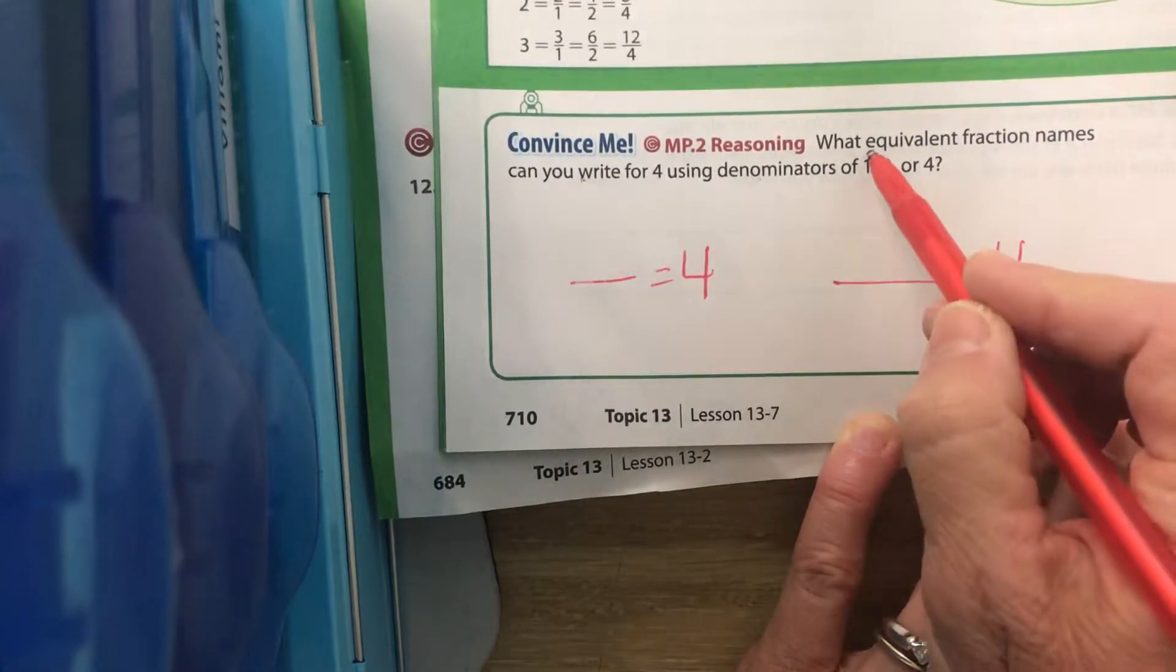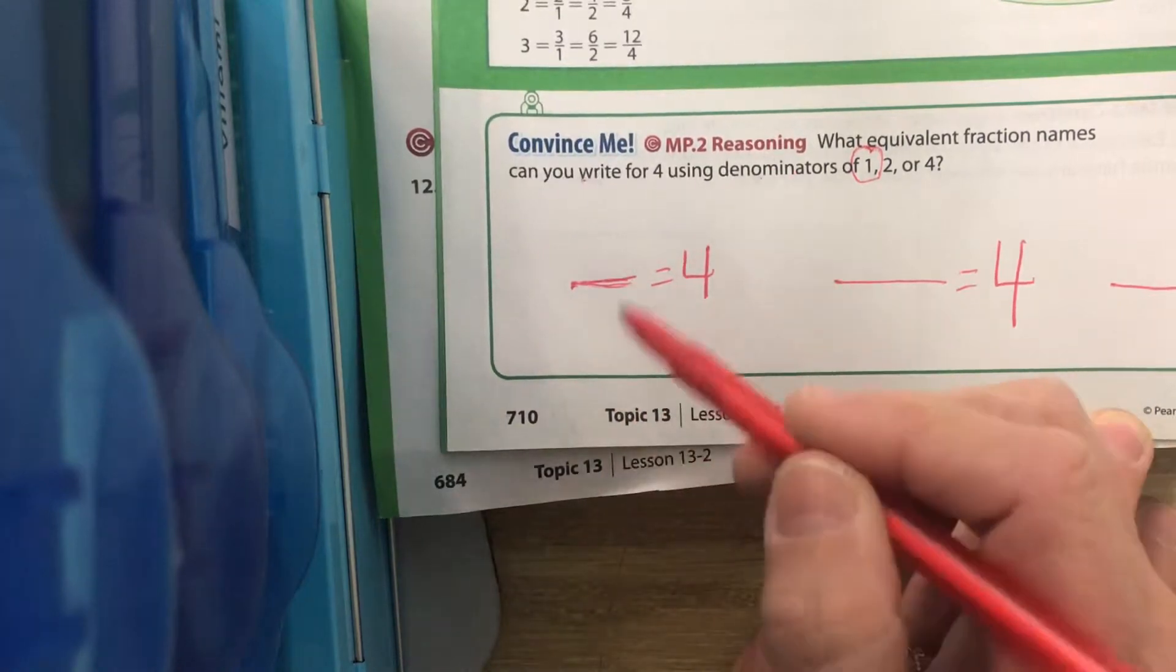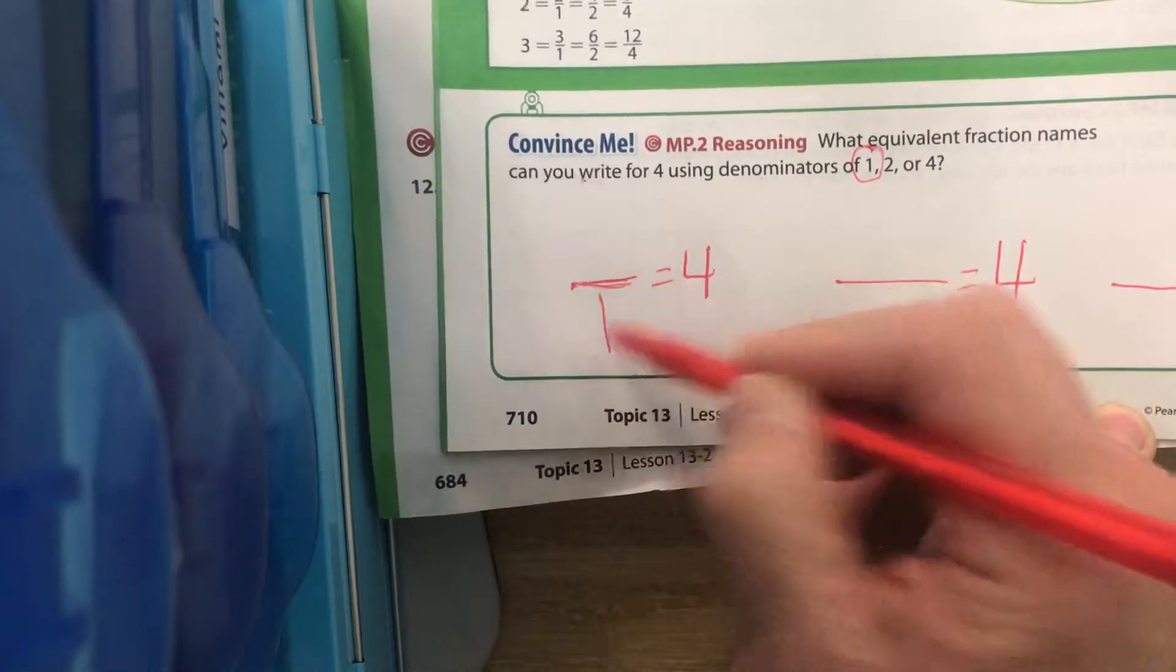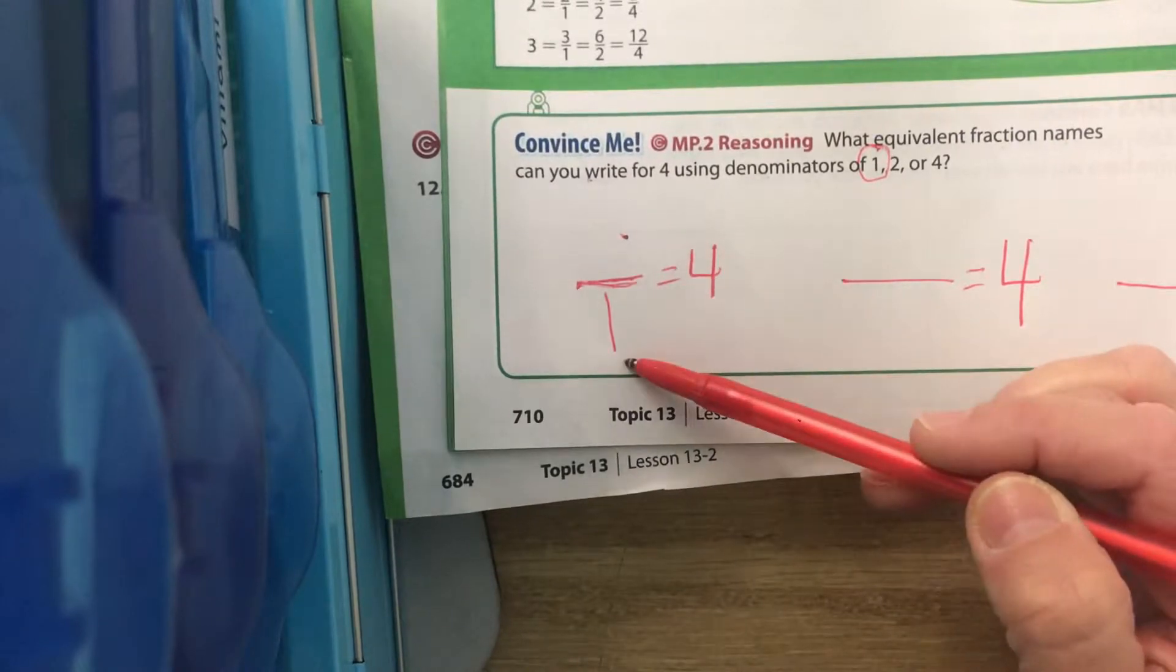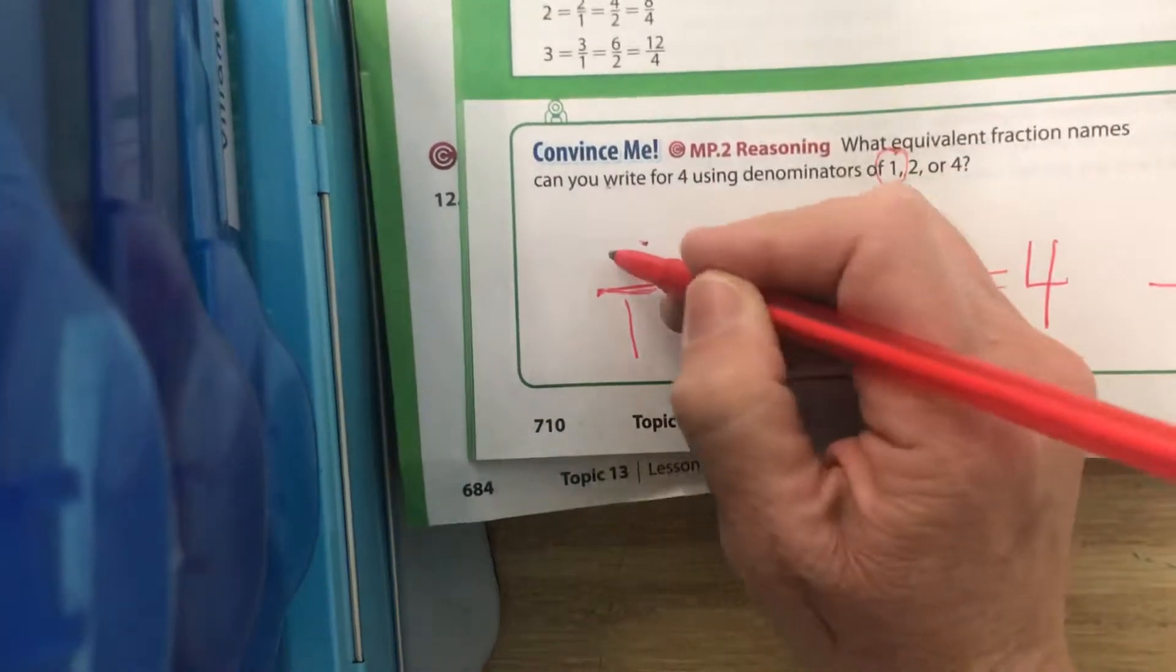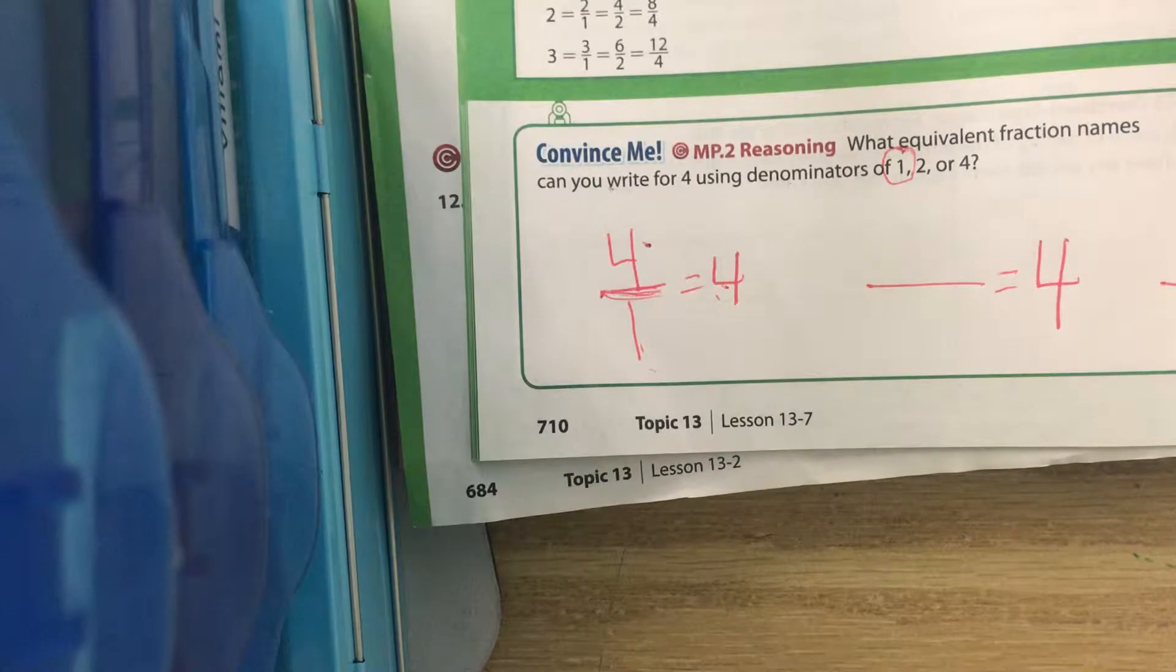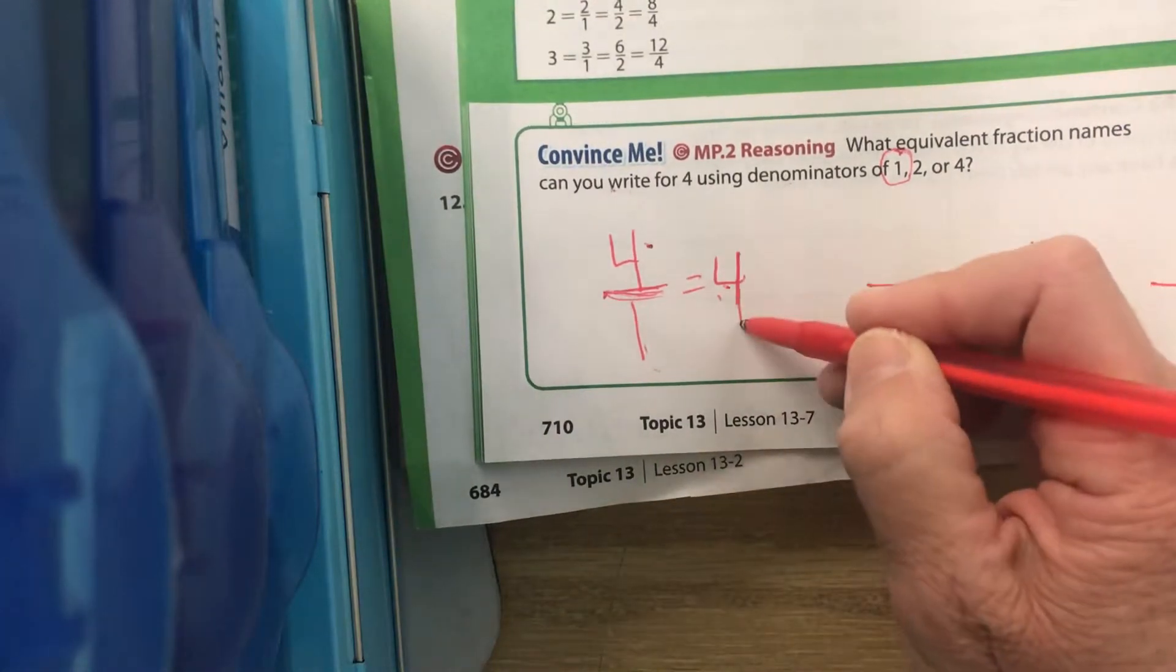Write a fraction line and have that equal whole number 4. Notice that my whole number 4 is taking up both parts of that fraction. Let's work with a denominator of 1. Where are you going to put a denominator? Down. What number divided by 1 equals 4? Class, shout it out. 4. So 4 ones equal 4.